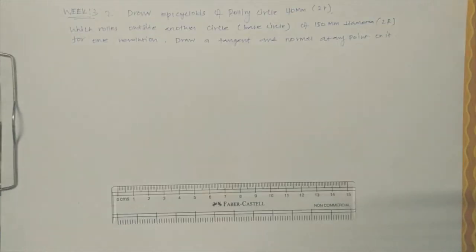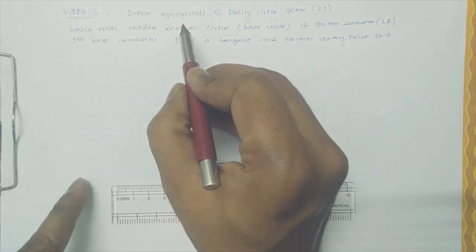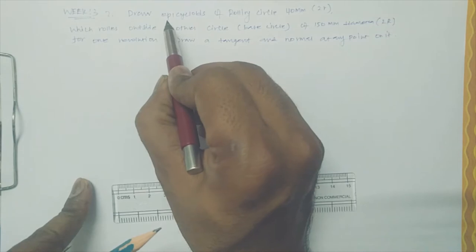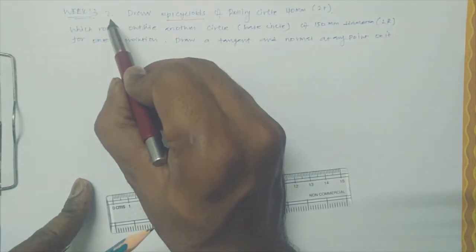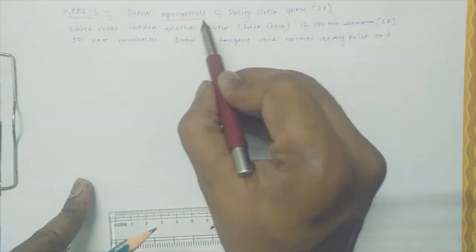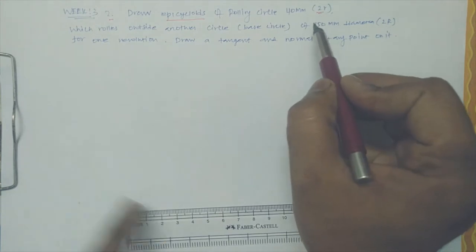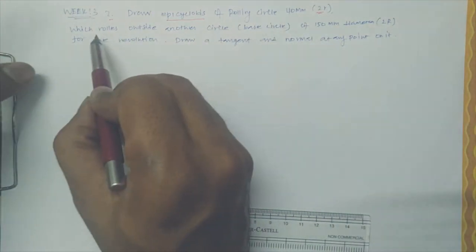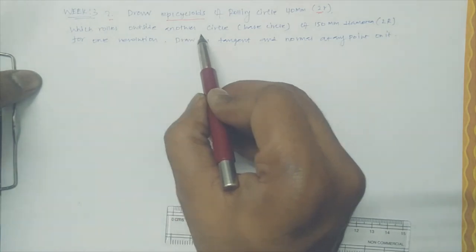Hello students, this class we're going to draw the epicycloid. It's from B3 problem number 2. Draw an epicycloid of rolling circle 40mm, 2r, this 2 radius, 40mm in diameter.